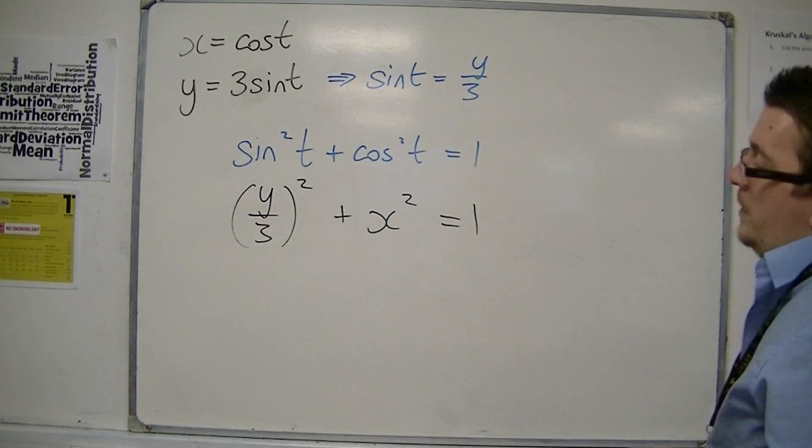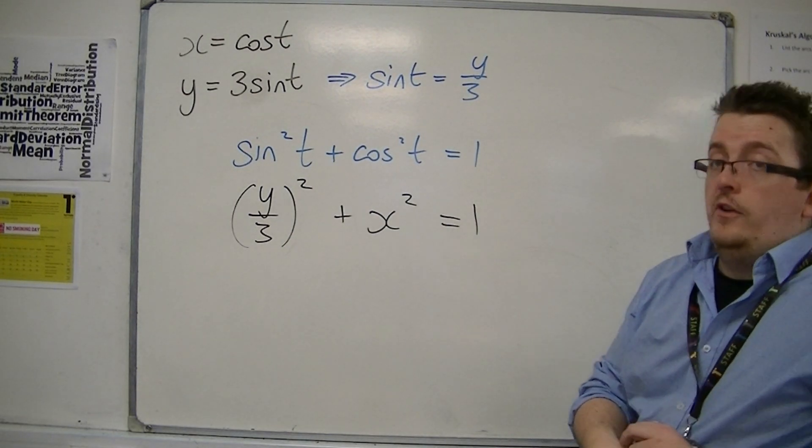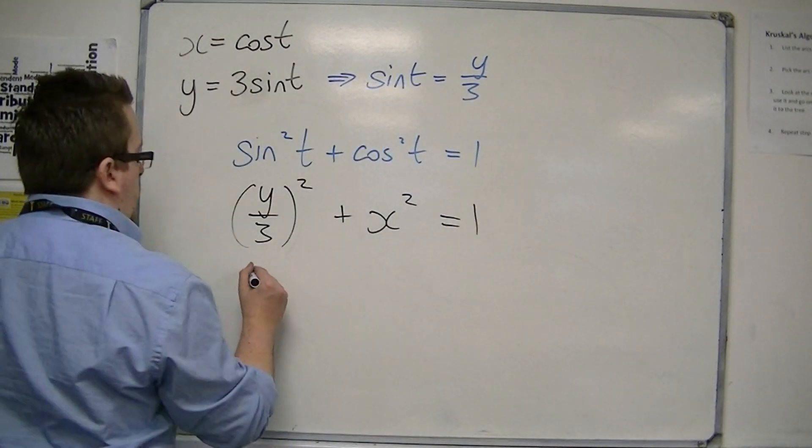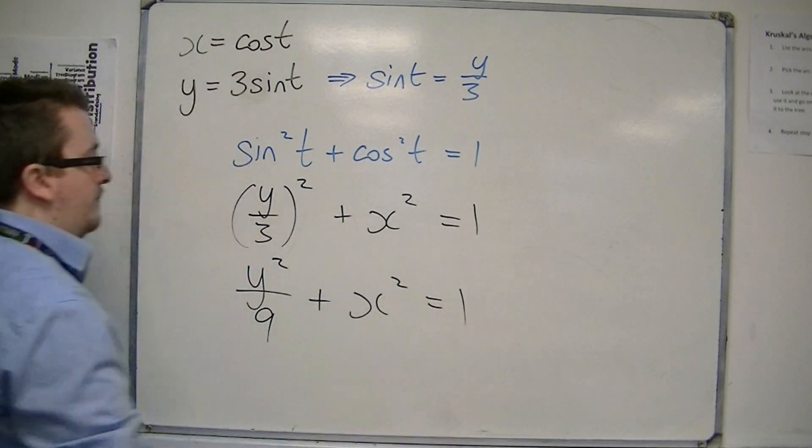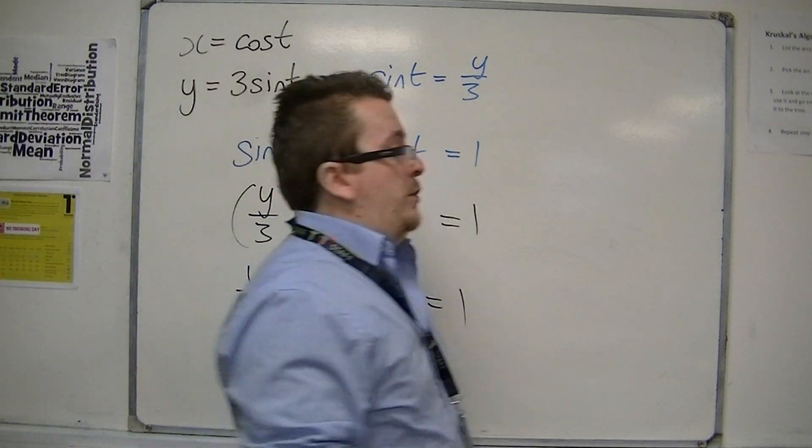It's very similar to a circle. y squared over 9 plus x squared equals 1. But what does this look like?